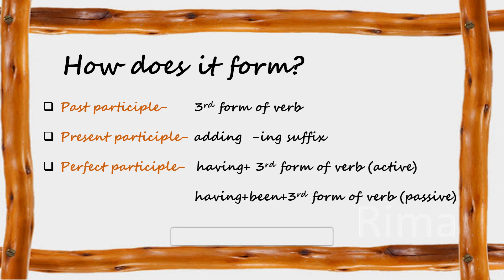The third one is perfect participle. It is formed by using 'having' plus the third form of the verb in active sentences. In passive sentences, the form is changed to 'having been' plus the third form of the verb. This is how it is formed.